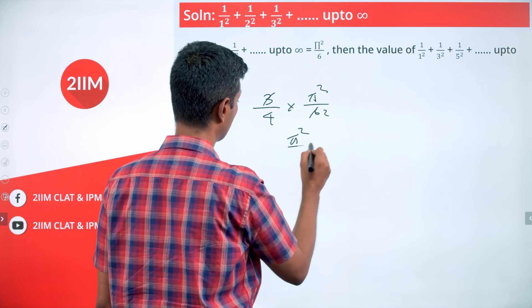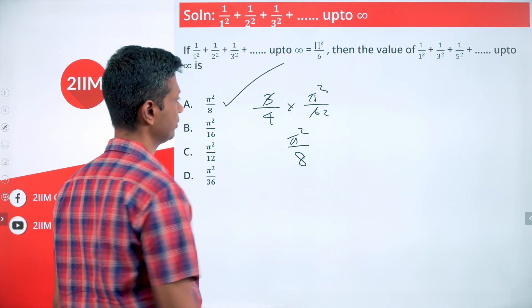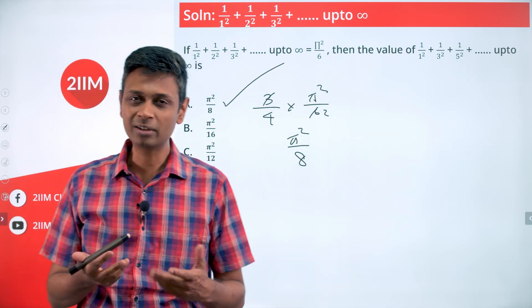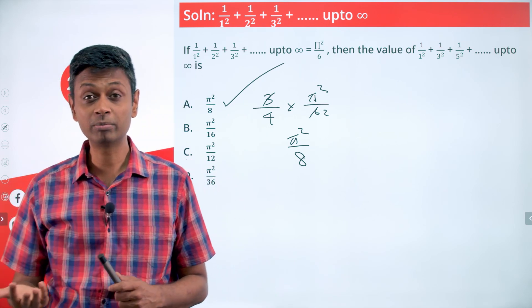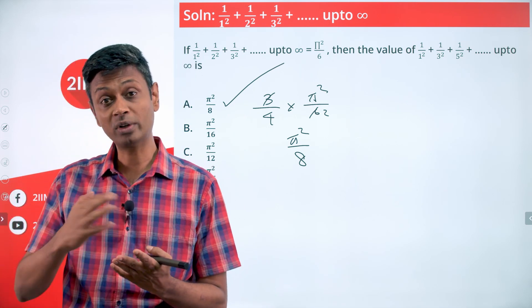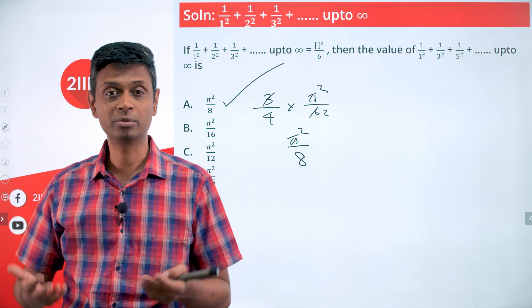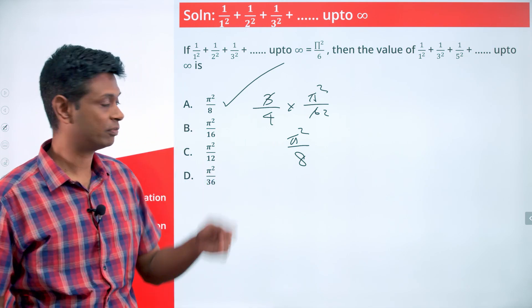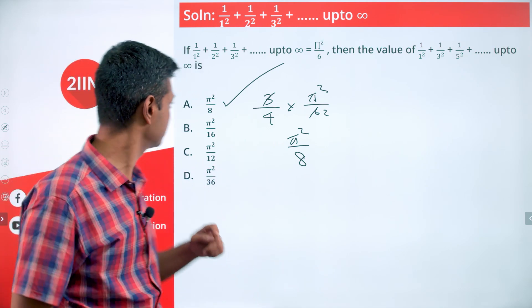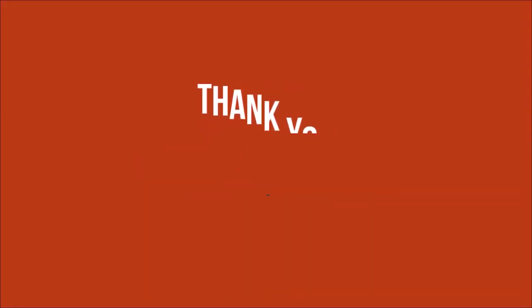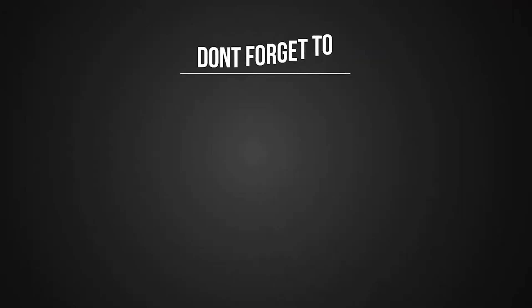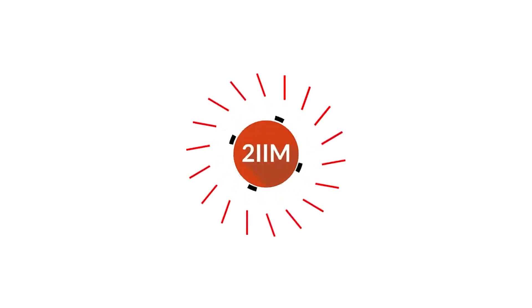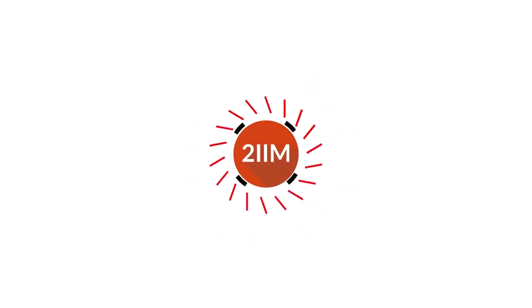So the answer is (3/4) × (π²/6), which equals π²/8. The odd terms are difficult to compute directly, but the even terms are simply one-fourth of the total. Therefore, the odd terms must be three-fourths of the total: (3/4) × (π²/6) = π²/8.